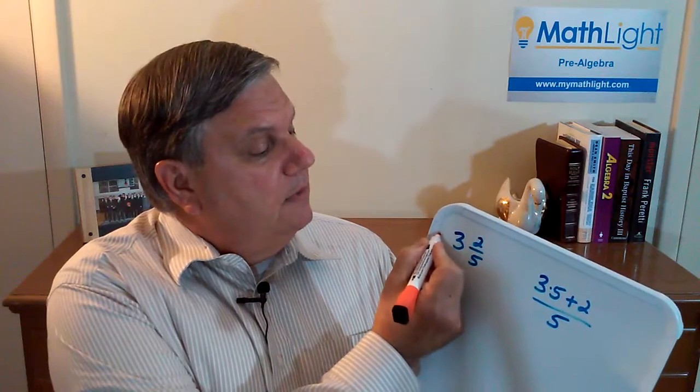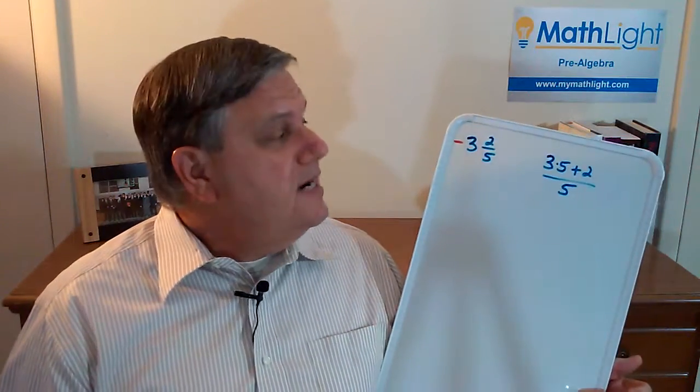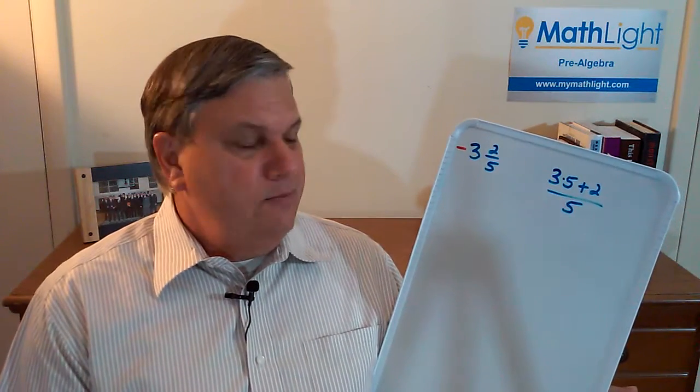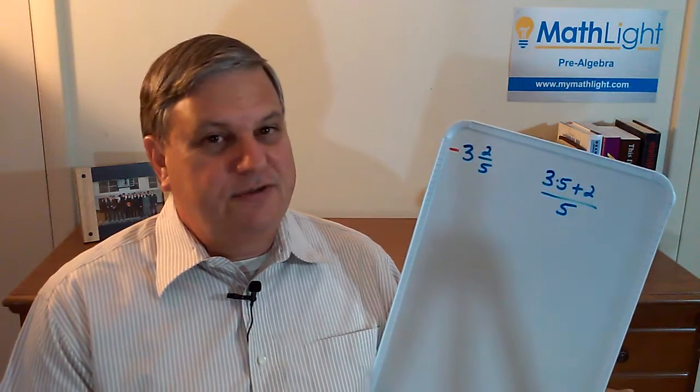What is a problem, and if you've taught any amount of time, you know this, and that's when the quantity is negative. Negative 3 and 2 fifths. And if you taught any amount of time, you know that your students want to give you the answer of negative 13 fifths.